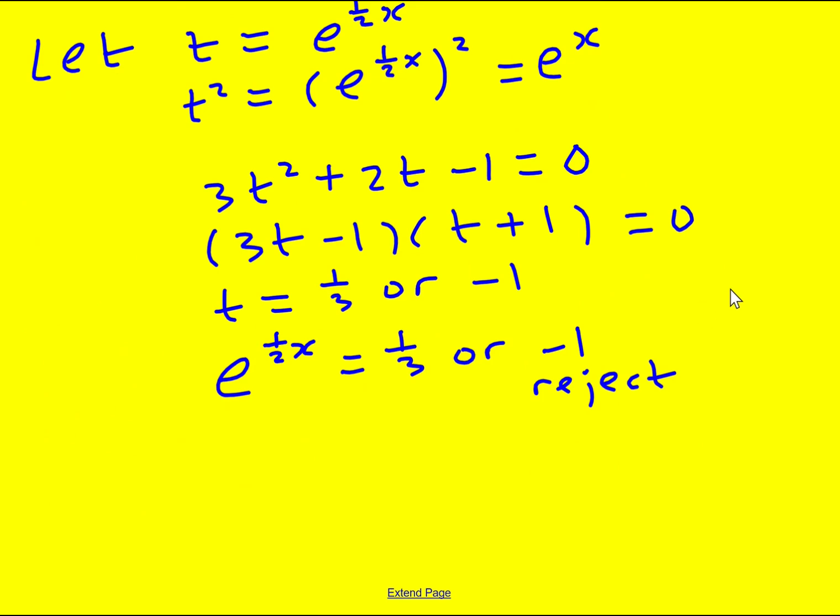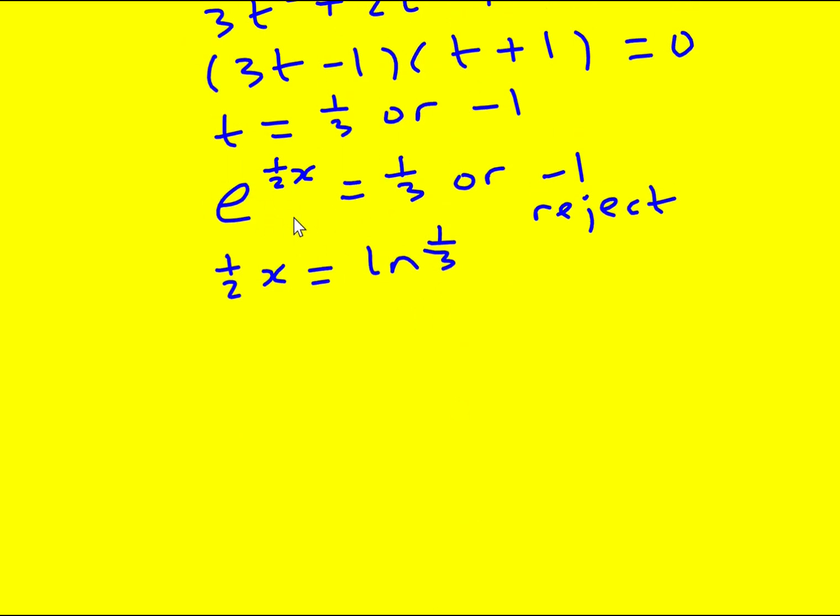I've got e to the half x equals a third. Now I want to work out what x is. We can take natural log and get that half x equals ln a third. That is the property of logarithms and exponentials. By definition, log base e of a third equals a half x means e to the power of a half x equals a third. These are the same thing, just different ways of writing it. If I take natural log of both sides, I can bring down the half x using my third rule of logs. And ln e is just one, so I get half x equals ln a third.